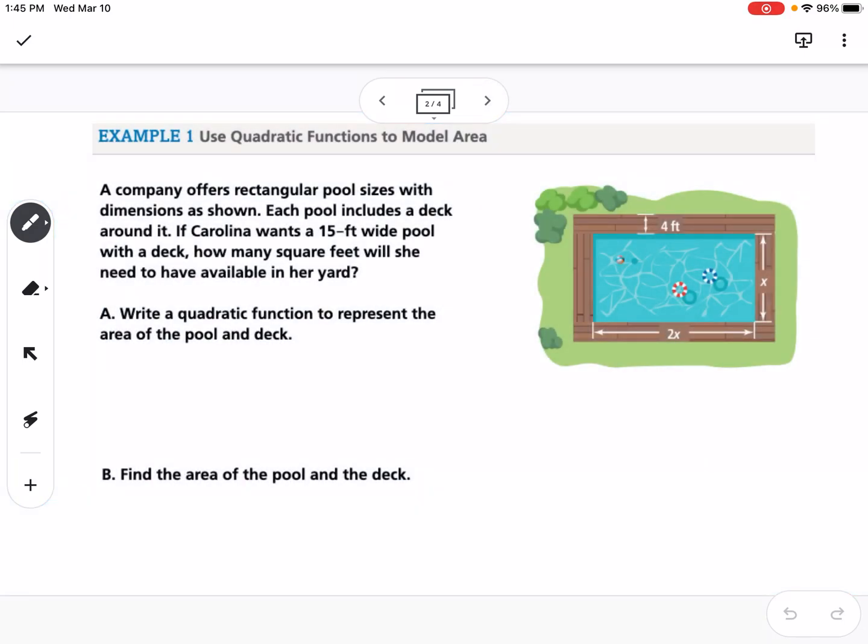Our first example says a company offers rectangular pool sizes with dimensions as shown. Each pool includes a deck around it. If Carolina wants a 15-foot-wide pool with a deck, how many square feet will she need to have available in her yard? First part is to write a quadratic function to represent the area of the pool and the deck.